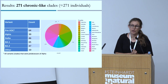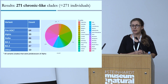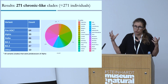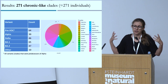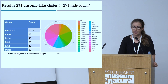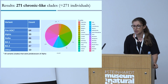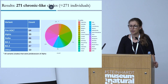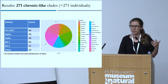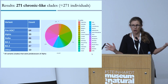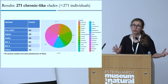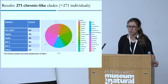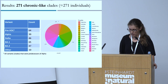These are the results. We found 271 chronic-like clades, each presumably representing an individual chronically infected person. This is the breakdown of variants found in these cases, and the breakdown of countries from which these individuals come. We don't see obvious bias here — more sequences from the USA and Europe make sense given that those regions sequenced more. Overall the breakdown is sensible.